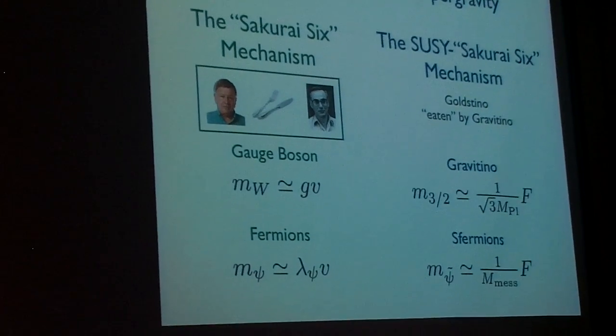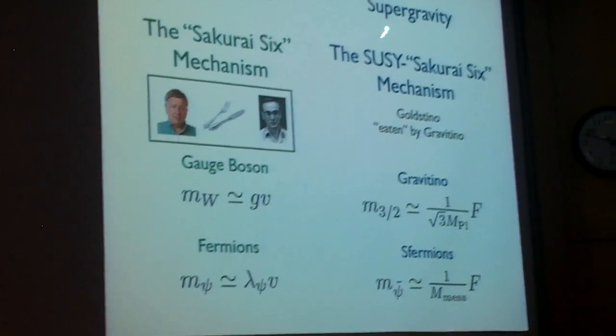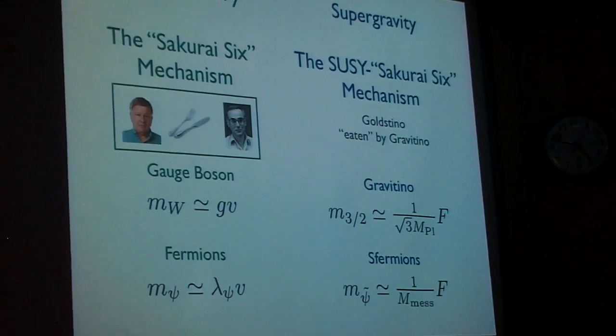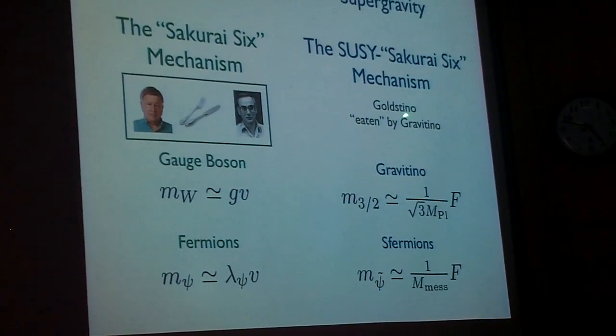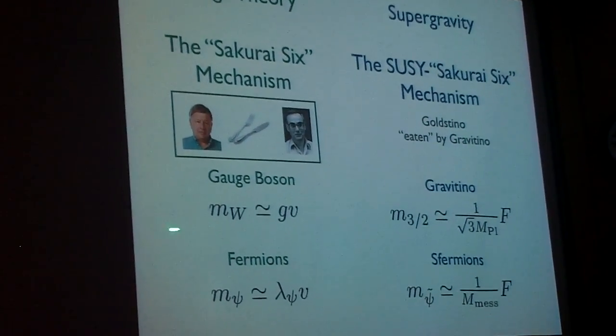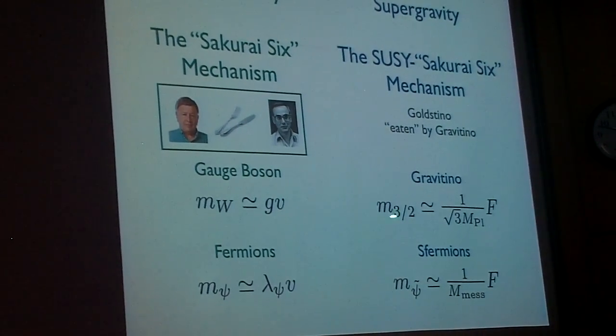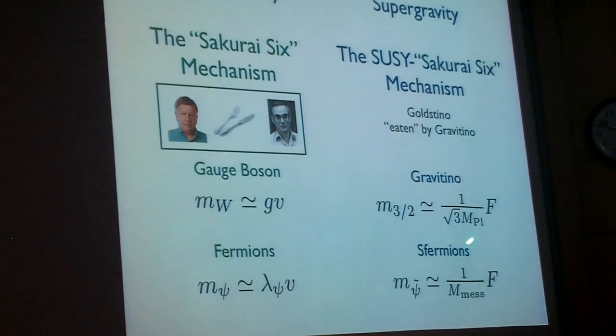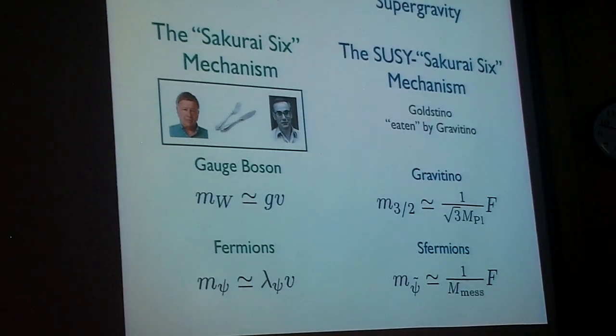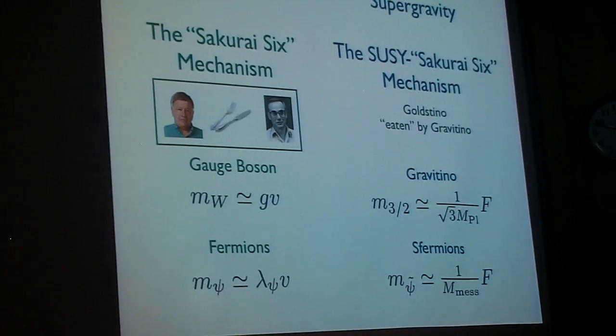What happens in supergravity is just a supersymmetric version of this Sakurai-Six mechanism. That is, the Goldstino, this goldstone fermion coming from the spontaneous breaking of supersymmetry, is eaten by the gravitino, the spin three-halves partner of the graviton. The gravitino gets a mass proportional to the effective gauge coupling of gravity, which is one over the Planck scale, times the order parameter for supersymmetry breaking, which we usually call f, in case I'm thinking about f-term breaking. And similarly for the superpartners, they also get a mass from this exact same mechanism.